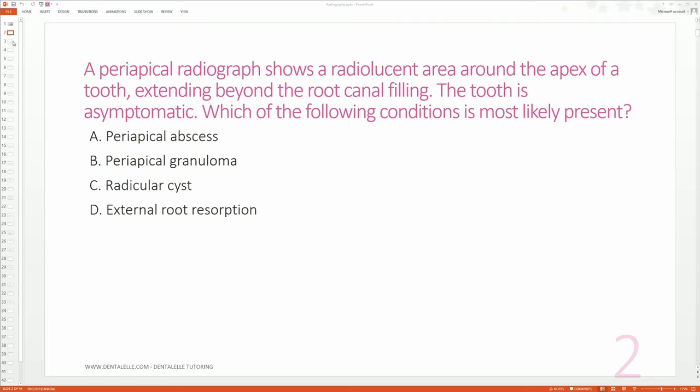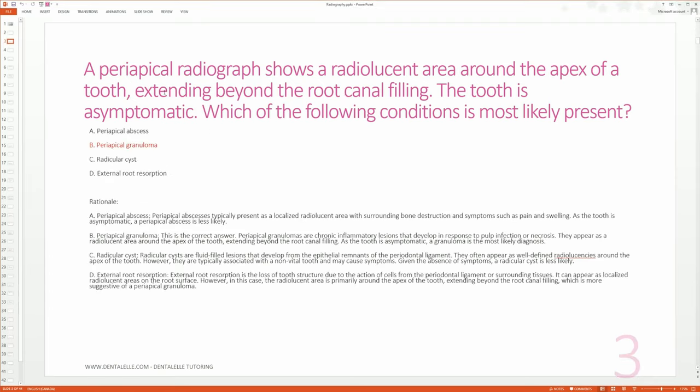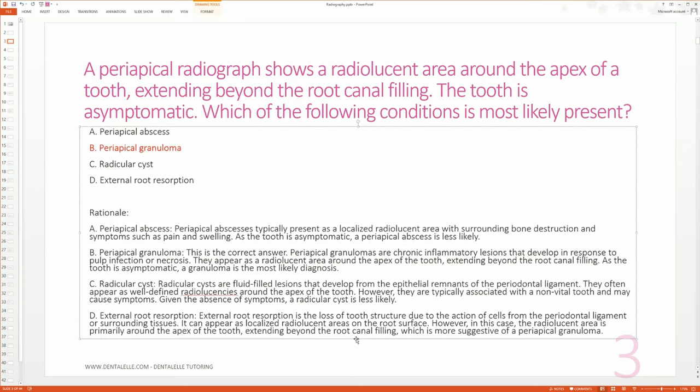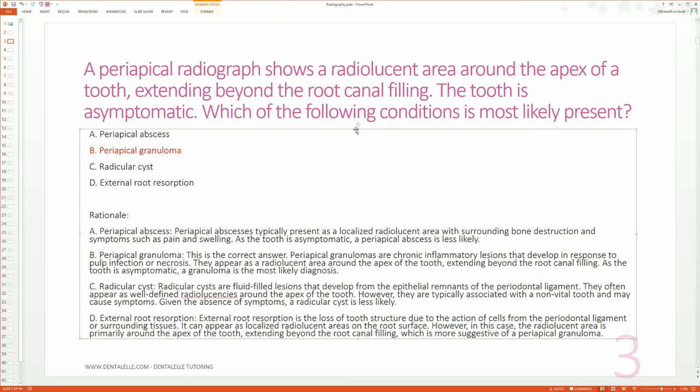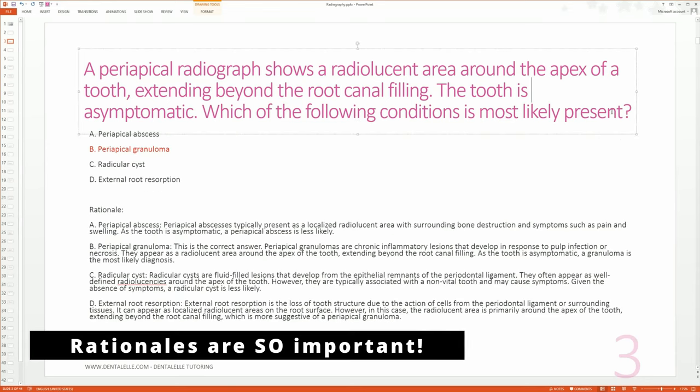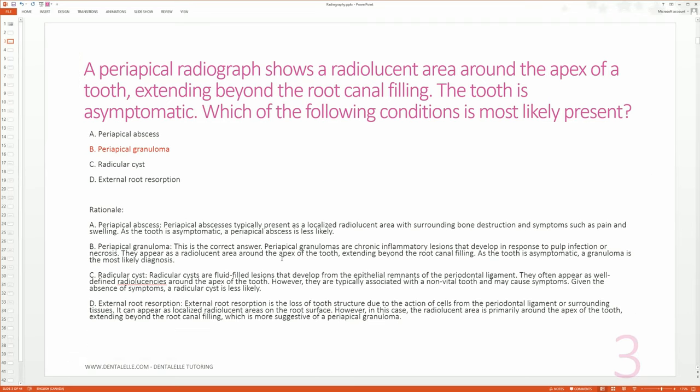Okay, let's go through it. The best answer is going to be the periapical granuloma. Sorry that this text is a little bit small, but I had to fit in all the rationales here. I can actually make it bigger, let's do that. B is the best answer because they are chronic inflammatory lesions that develop in response to pulp infection or necrosis, meaning something has died.